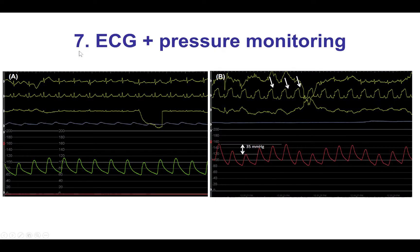The seventh key principle is to pay careful attention to the EKG and pressure. This applies not just to CTO PCI but to any PCI and any coronary angiography or cardiac catheterization. The EKG is important to detect changes such as ST elevations. Similarly, blood pressure monitoring can reveal signs of trouble, such as pulsus paradoxus that can suggest tamponade.